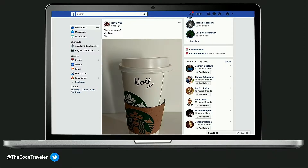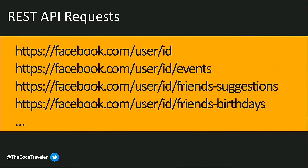Now this is a lot of data to load just to launch the website. And all this data exists in different places, which means there are going to be multiple API requests. Just to load this page, we'd have to hit the API facebook.com/user/ID to get information about the user, then user/ID/events, ID/friend-suggestions, and ID/friends-birthdays. We didn't even touch on the timeline, so we're talking about dozens of API requests just to retrieve all this data.